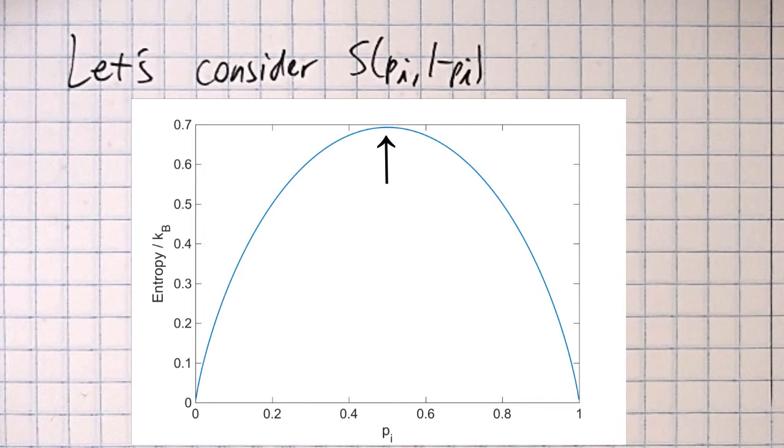This is a general property, as any transformation of the probability distribution that makes the probabilities equal tends to increase entropy. That's all. Thank you.